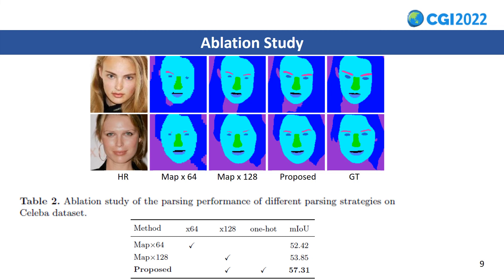Here, we study the accuracy of the semantic maps at different scales and supervising strategies. For the evaluation of semantic maps, the mean Intersection over Union (mIoU) is used to measure accuracy. As shown in Table 2, the proposed one-hot strategy achieves the highest mIoU. The improved performance demonstrates the effectiveness of the one-hot supervision strategy.